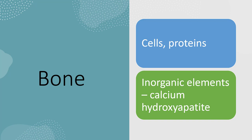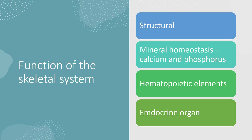Unlike any other organ in the body, bone has inorganic elements, and the most represented is calcium hydroxyapatite. The skeletal system has a structural function, a huge role in calcium and phosphorus metabolism, it stores and nourishes hematopoietic elements, provides requisite elements to keep trilineage hematopoiesis going, and is also a major endocrine organ.